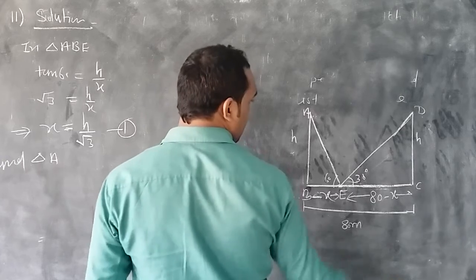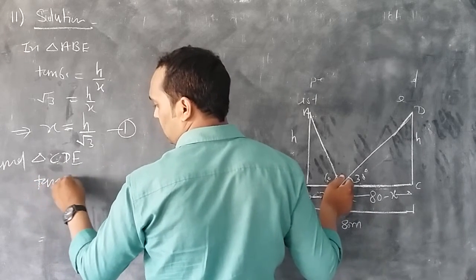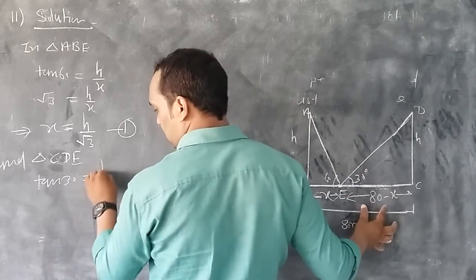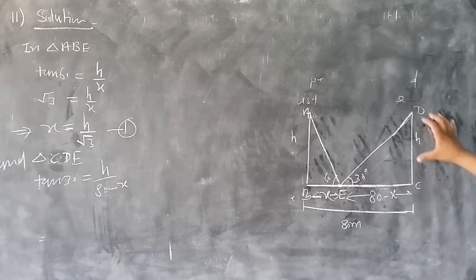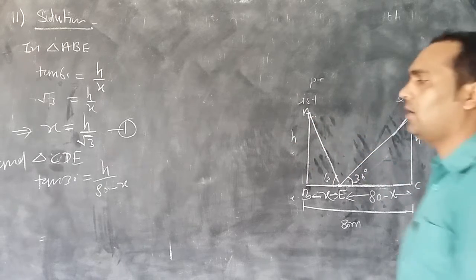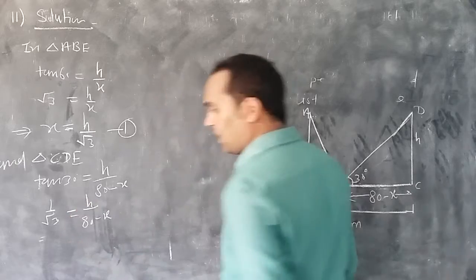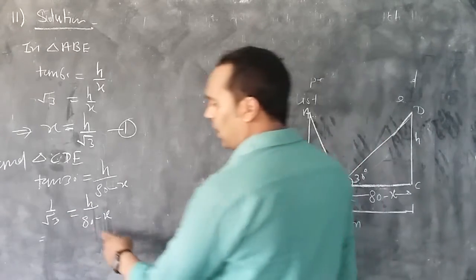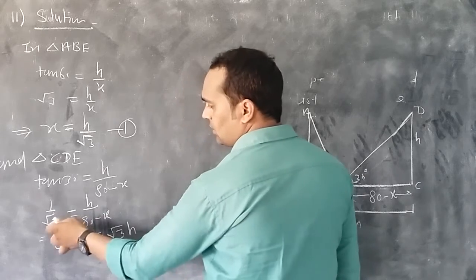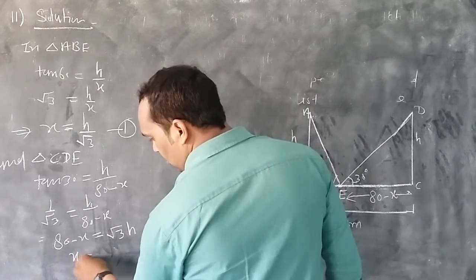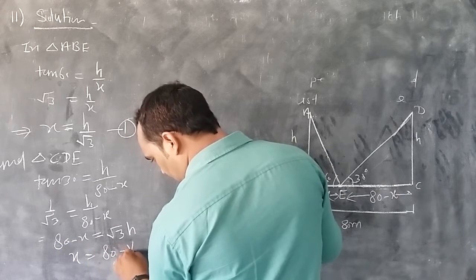In triangle CDE, the angle is 30 degrees. Using tan 30°: perpendicular upon base gives h upon (80 minus x). So 1 upon √3 equals h upon (80 minus x). Cross multiplying: 80 minus x equals √3·h. Therefore x equals 80 minus √3·h. This is equation 2.